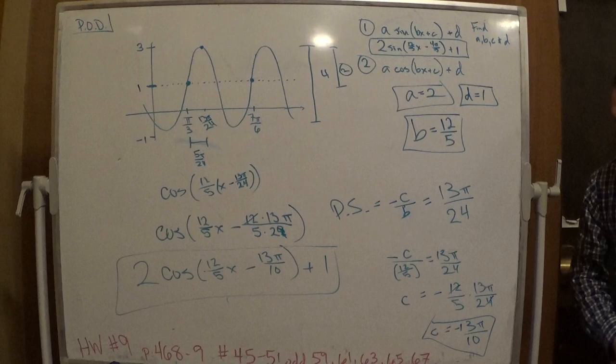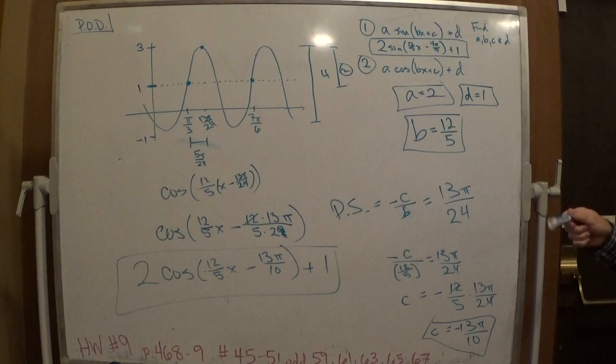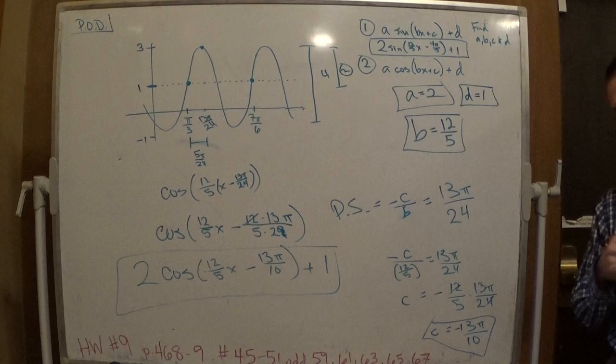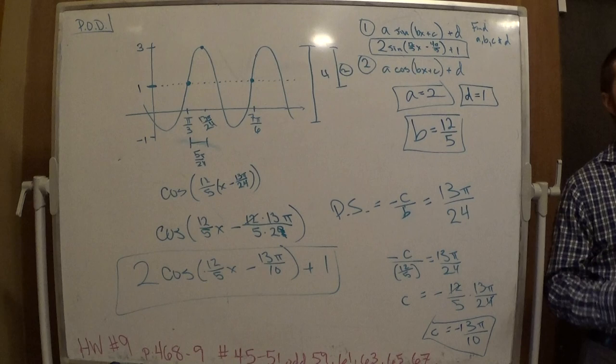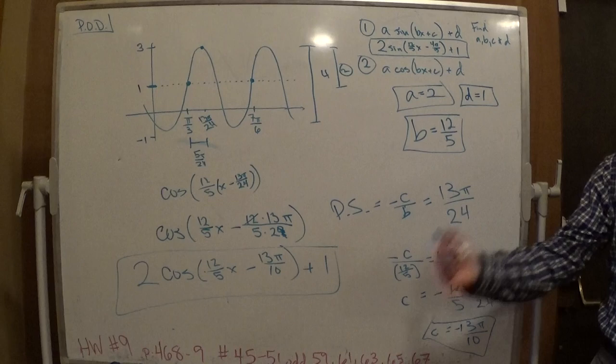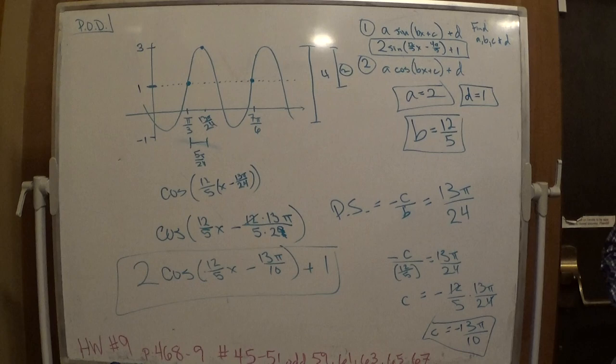Both methods give the same thing. So if you could do this problem, there's probably nothing in the homework that's going to be too hard. You do have to do it with tangent and cosecant. Next time we meet, we're going to do the same kind of thing with cosecant, secant, tangent, and cotangent. We're not going to spend that much time on it because it's ultimately the same thing — the only difference is that tangent and cotangent have a period of pi. The rest of it is exactly the same.